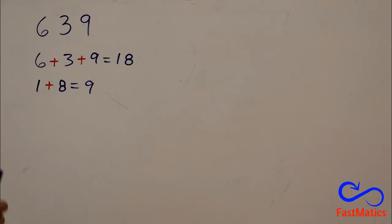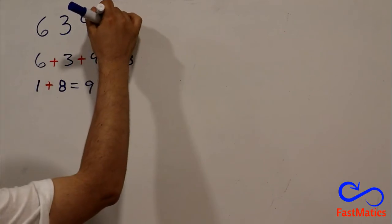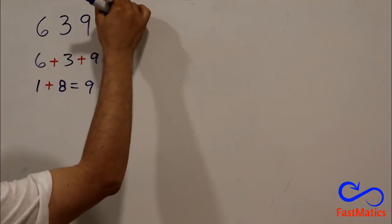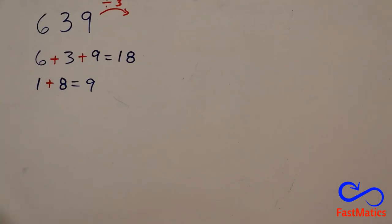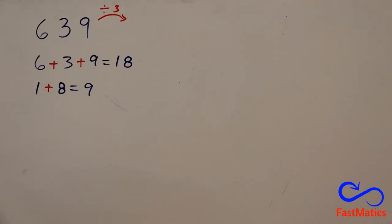So, 639 is divisible by 3. That means that you can divide the number by 3 and you can get a whole number, not a decimal number.